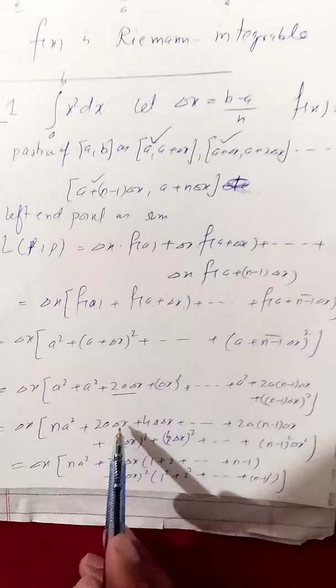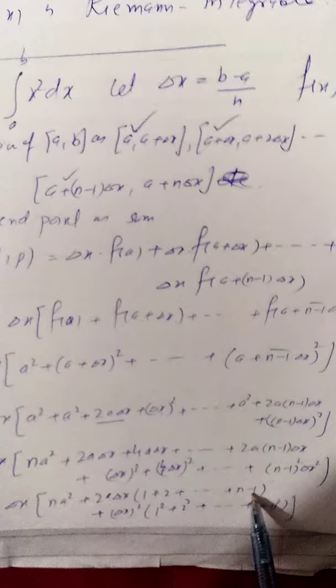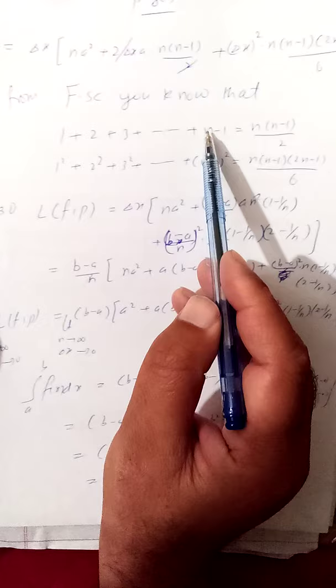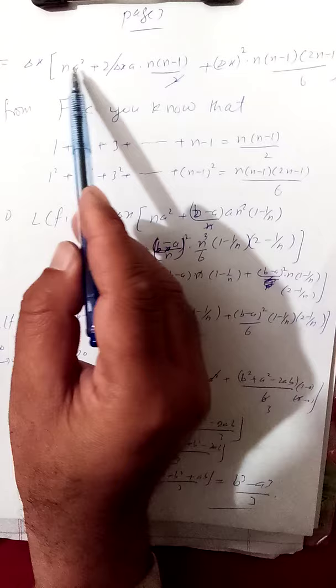Taking a² common gives n·a², taking 2a·delta x common gives 1 plus 2 plus ... plus (n−1), and taking delta x² common gives 1² plus 2² plus ... plus (n−1)². Now summing these series: the series 1 plus 2 plus 3 plus ... plus (n−1) equals n(n−1)/2, and the series 1² plus 2² plus ... plus (n−1)² equals n(n−1)(2n−1)/6. Putting these into the expression gives a simplified form.